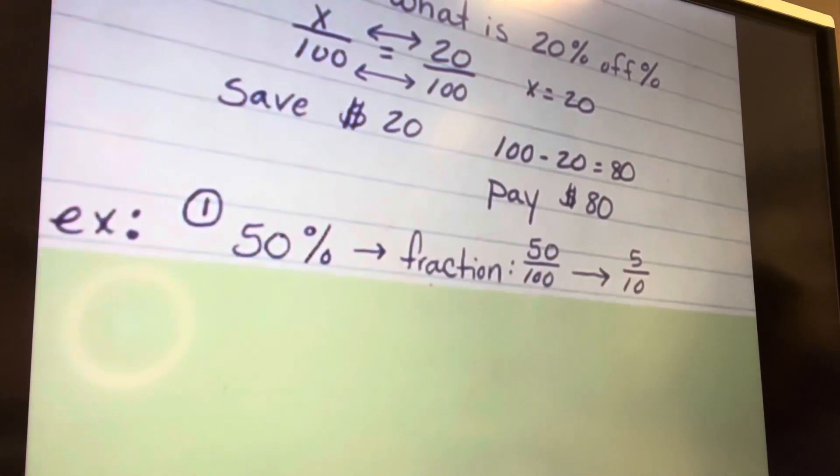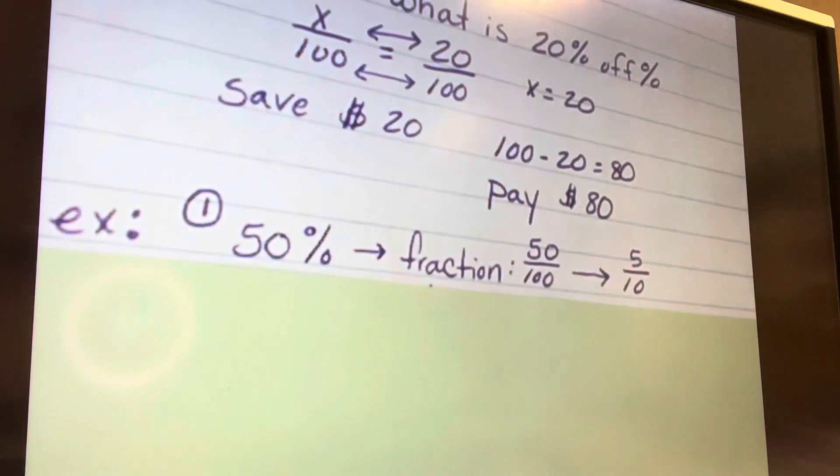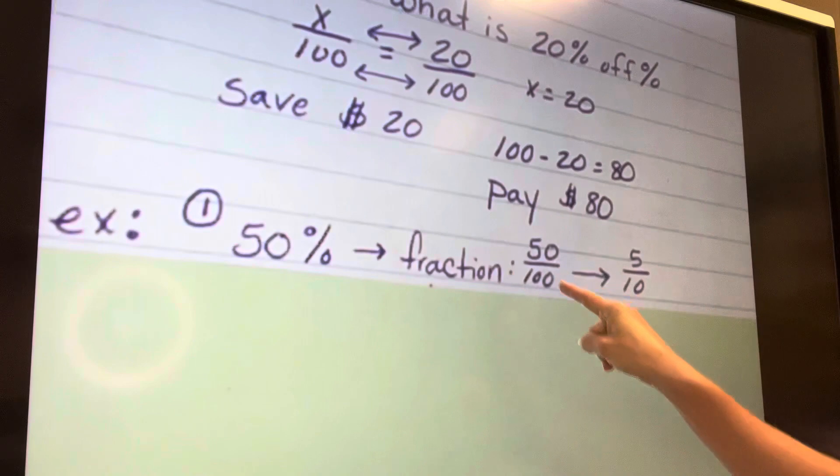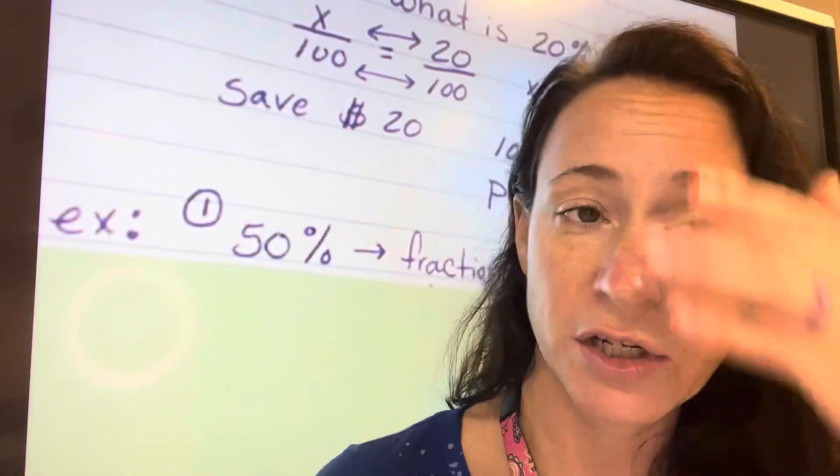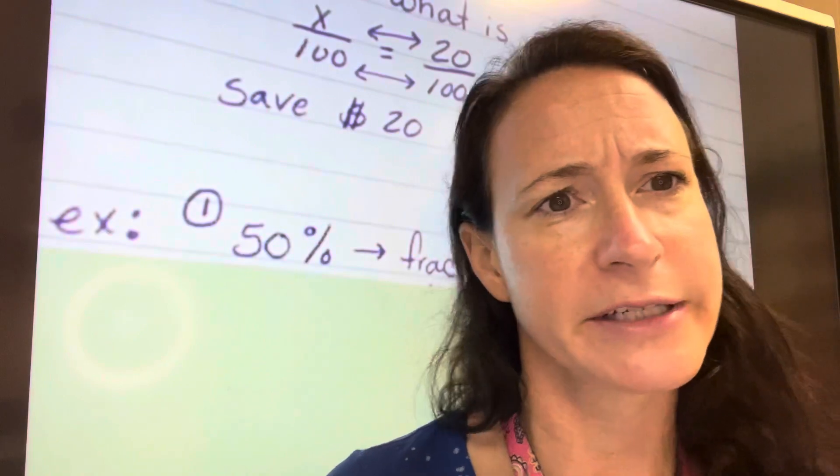Here's another example: 50%. To write that as a fraction, you would put that number over 100. Then you can simplify it to a tenth, 5 tenths. You could also simplify it even further to 1 half, which some of you can clearly see.